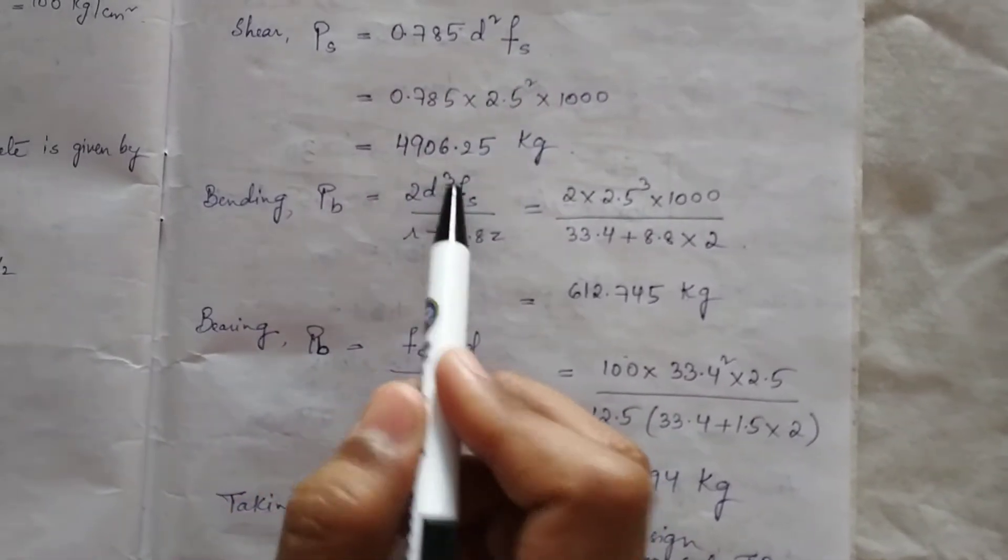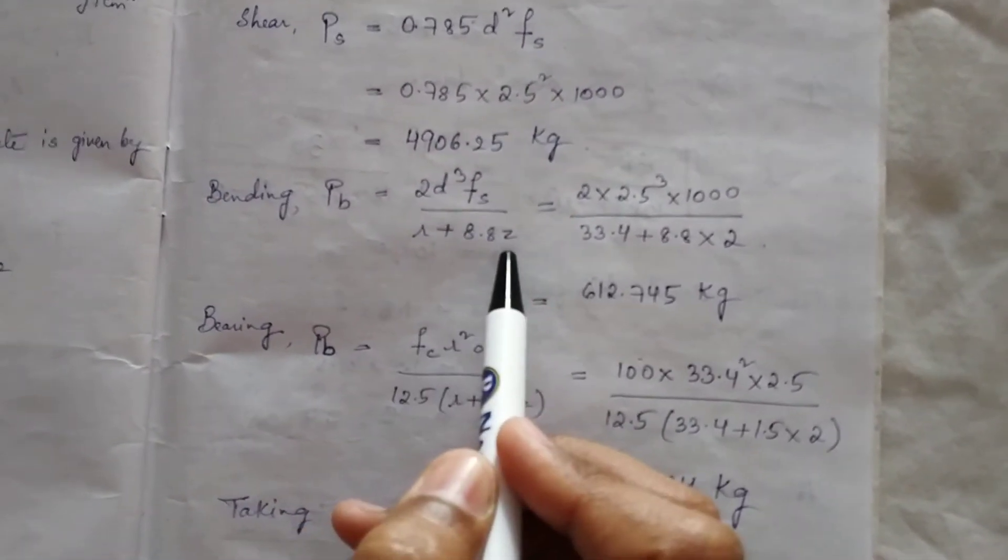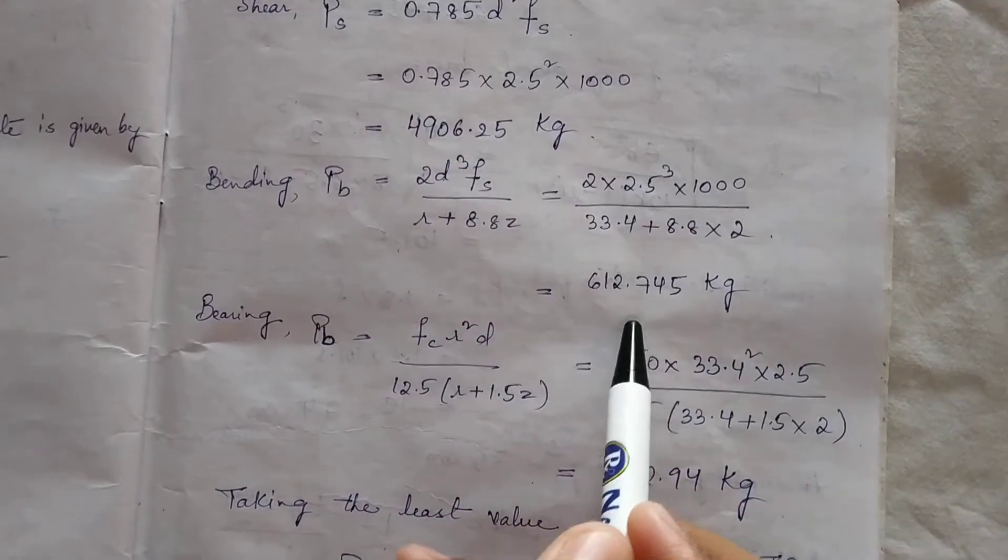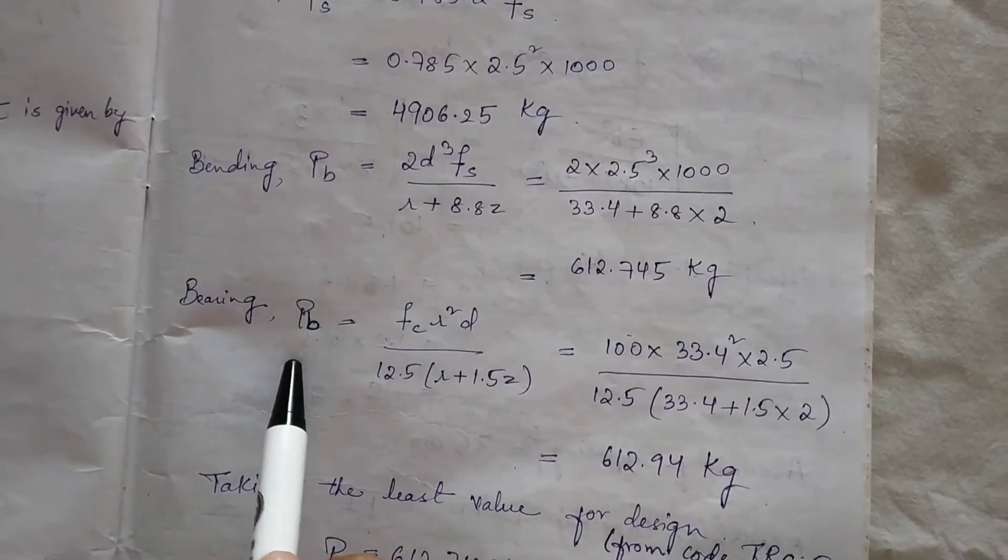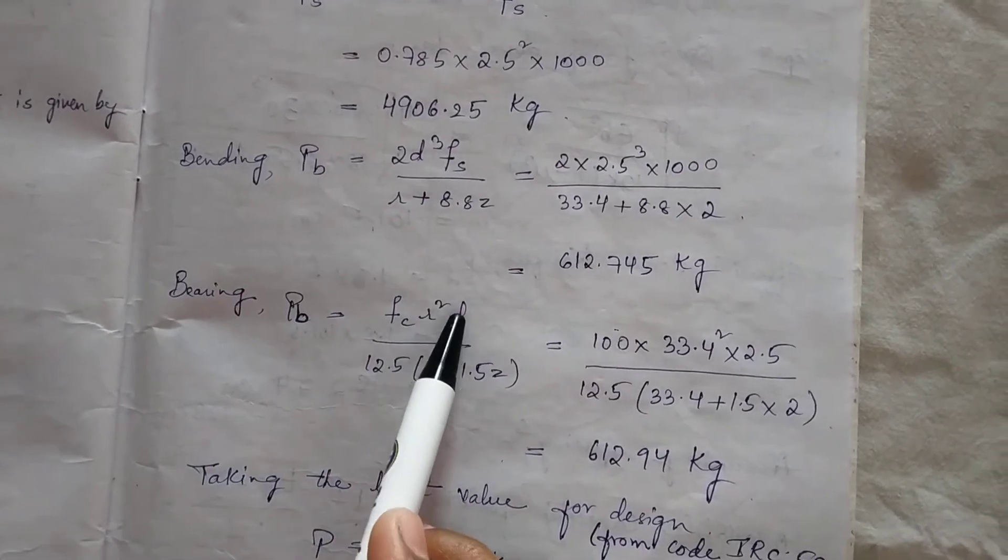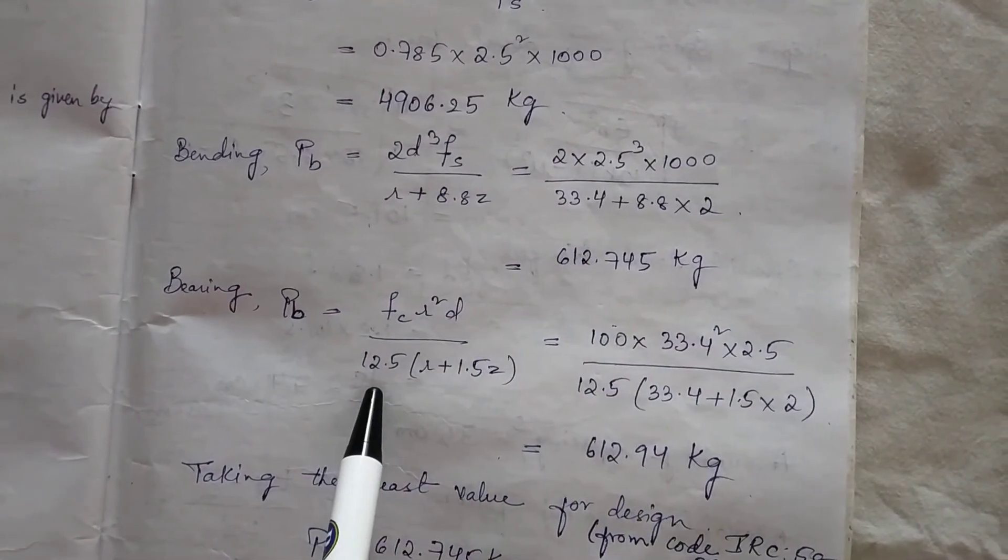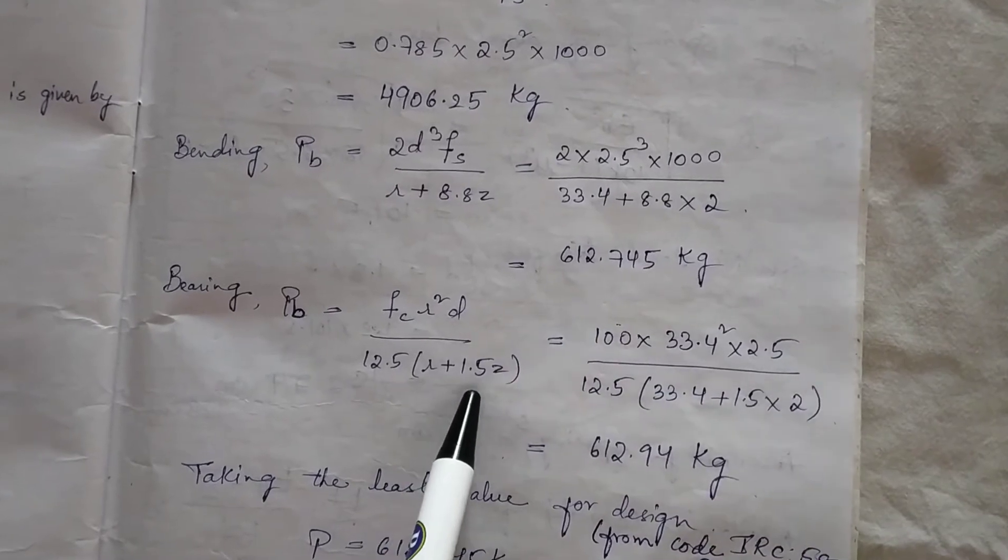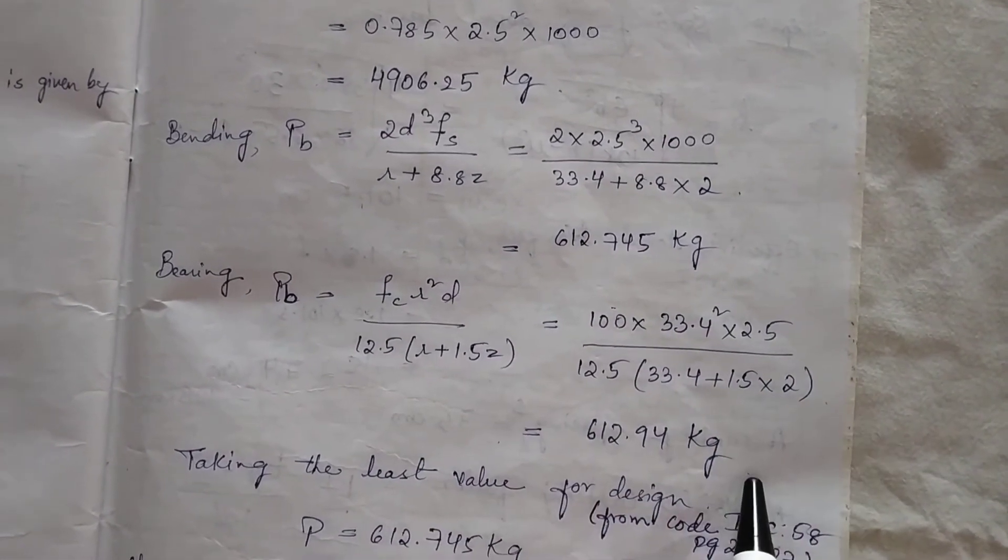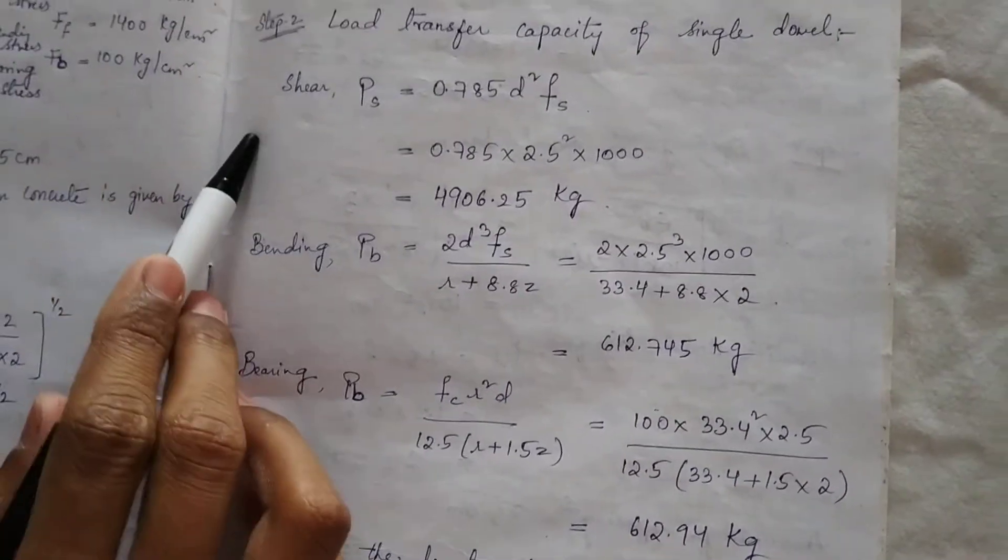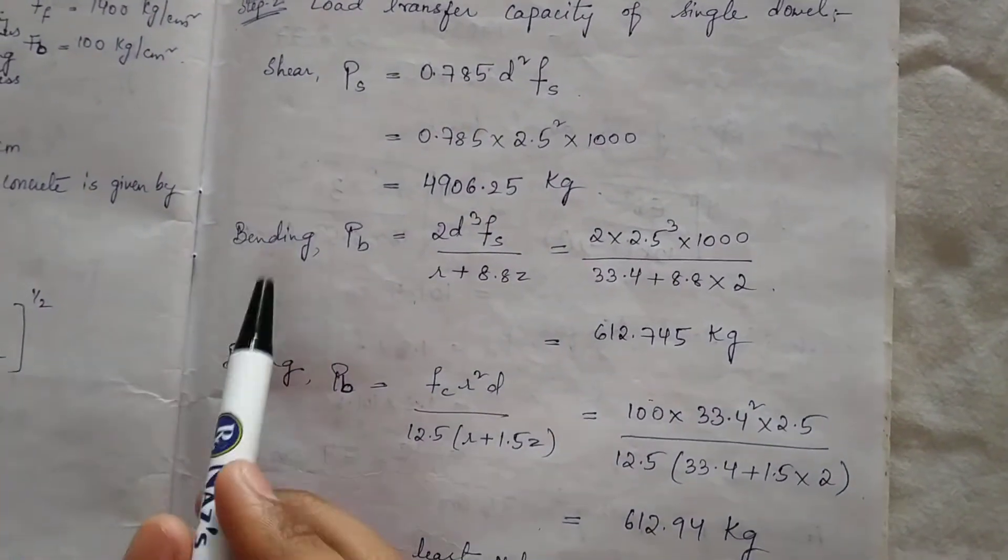Tb = 2d³×Fs / (r + 8.8Z). For bearing, Tb = r²×d / [12.5×(r + 1.5Z)]. We have the values, substitute and get results in kg.